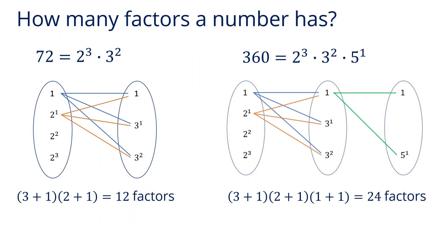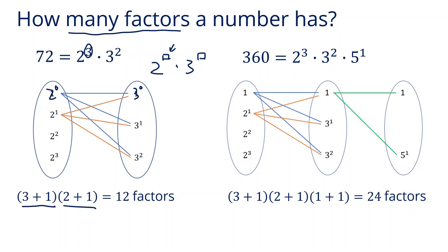The next topic is how many factors a number has. There's a simple mechanism for this. Take 72 as an example: 72 prime factorizes into 2³ × 3². Any factor has the form 2^a × 3^b, where the power of 2 can be 0, 1, 2, or 3, and the power of 3 can be 0, 1, or 2.